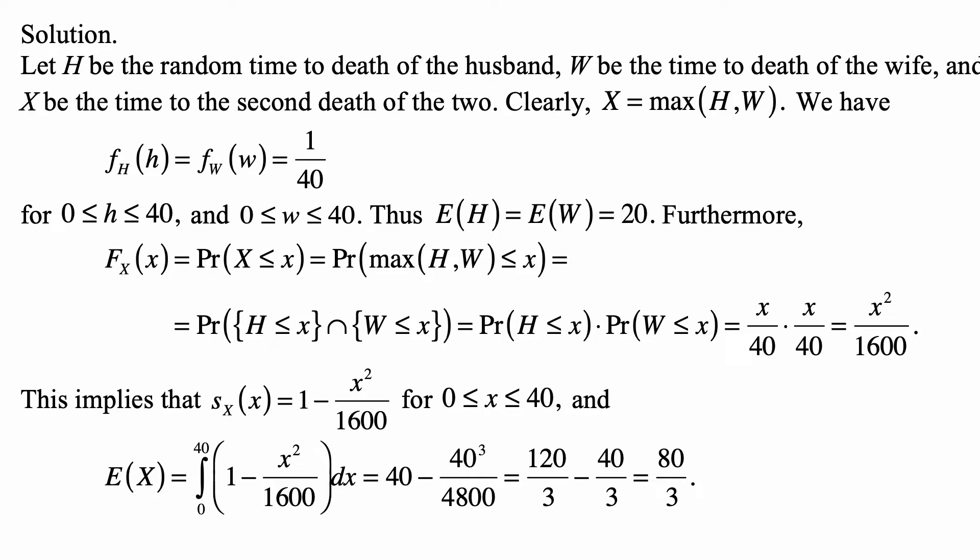And therefore, we can find the expected value using the survival function formula. The expected value of X is the integral from 0 to 40 of 1 minus x squared over 1600 dx. And that's 40 minus 40 cubed over 4800. That's the same as 120 over 3 minus 40 over 3, and that's 80 over 3.